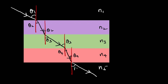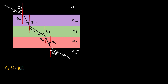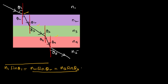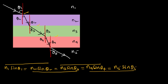Suppose the angle of incidence here is theta 1, and the angle of refraction is theta 2. The next angle of incidence will also be theta 2 because these two normals are parallel. Applying Snell's law at each interface: N1 sin(theta1) = N2 sin(theta2), then N2 sin(theta2) = N3 sin(theta3), then N3 sin(theta3) = N4 sin(theta4), and finally N4 sin(theta4) = N5 sin(theta5).